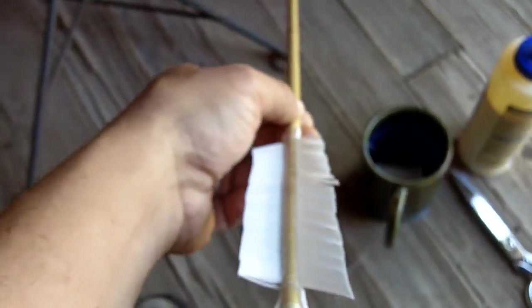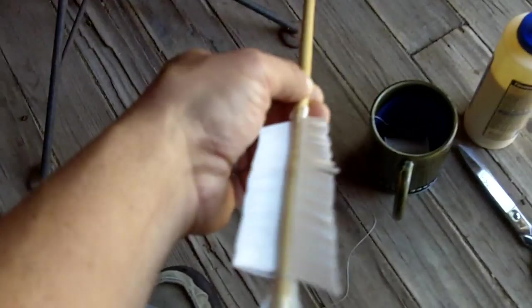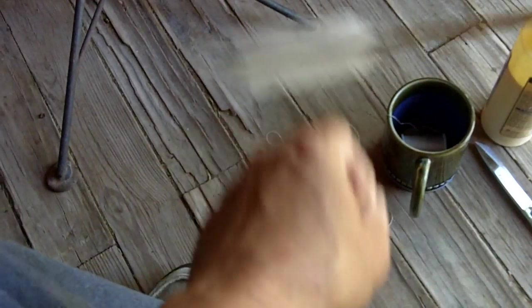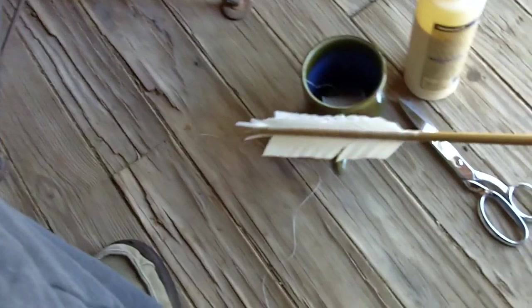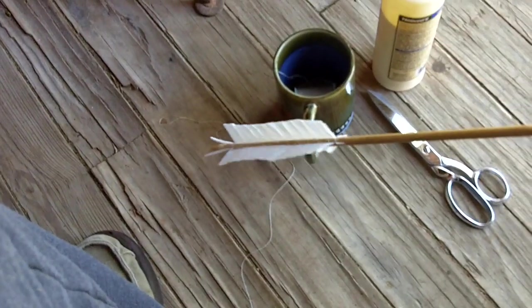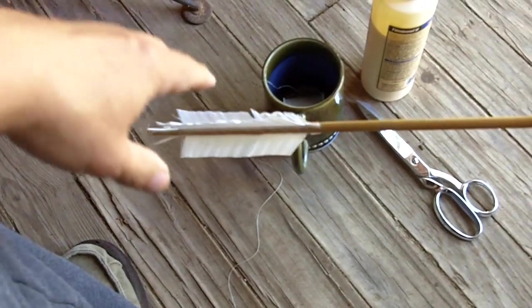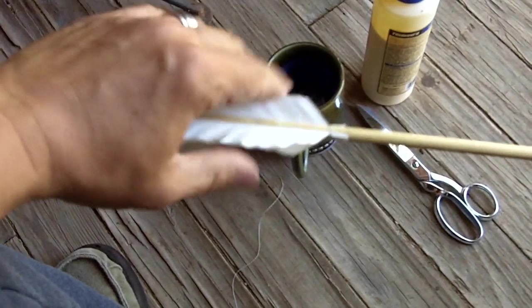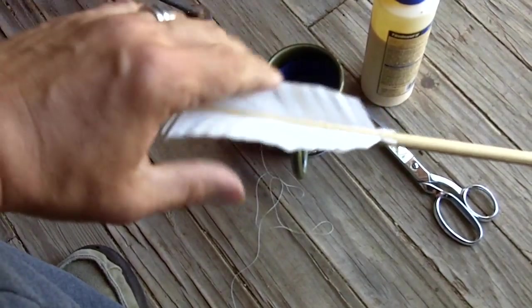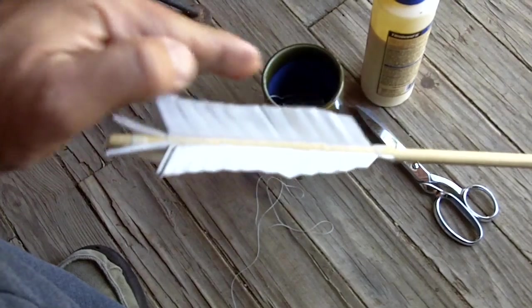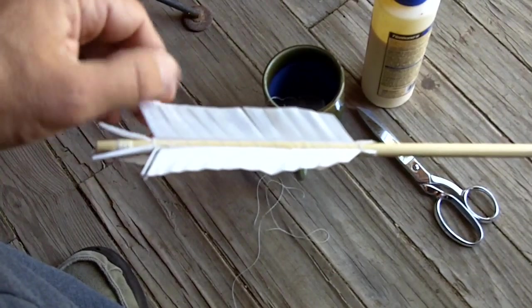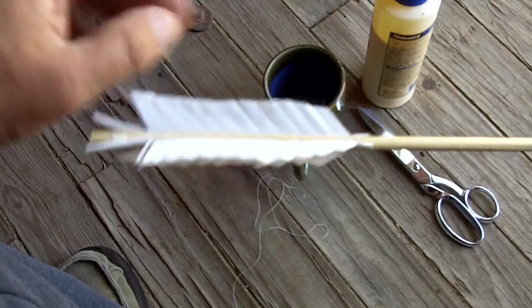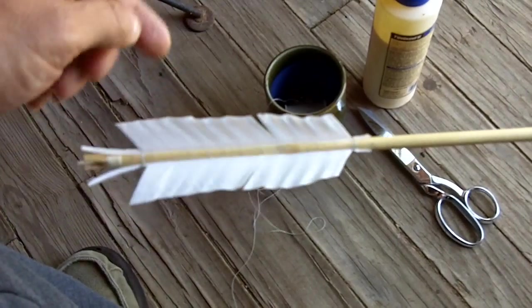I'll zoom out here. Maybe it'll look better. And this is just peeled fletchings, and with a preliminary cut, so it'll be easier to do the spiral wrap.